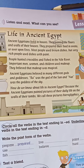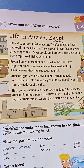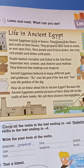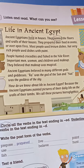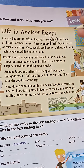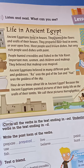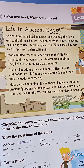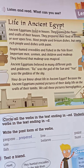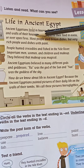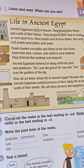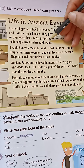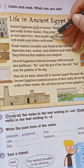Over open fires. This paragraph is about the life of ancient Egyptians. 'Most people used the brown dishes, but very rich people used the dishes with paint.' The verb 'use' ends with letter E, so we add D — let's underline it. 'People hunted crocodiles and fished in the Nile River.'